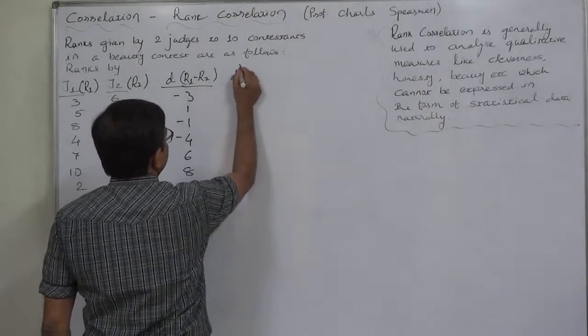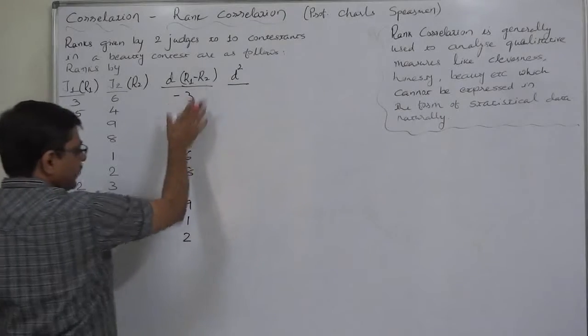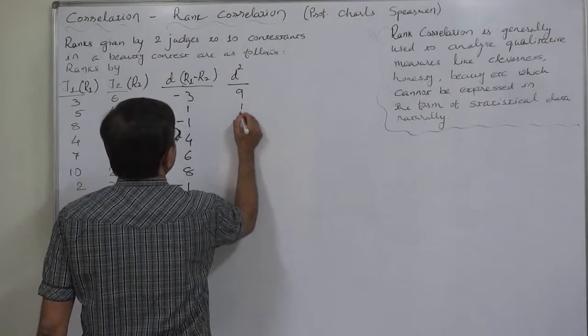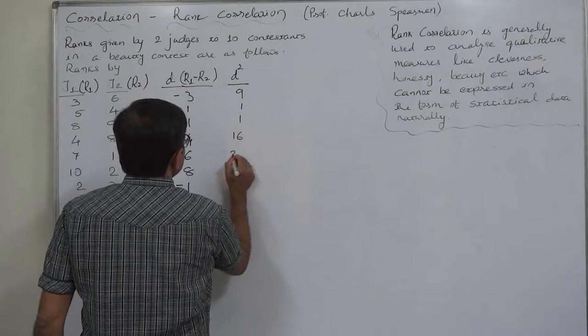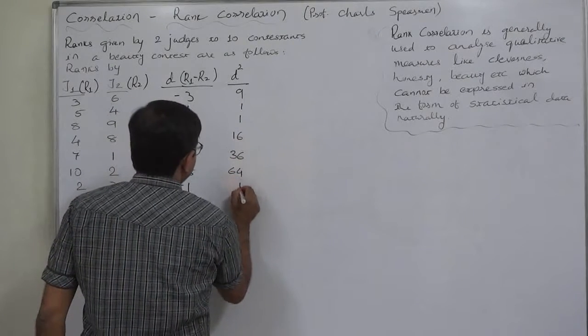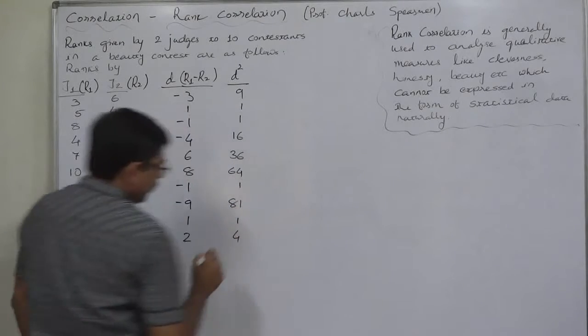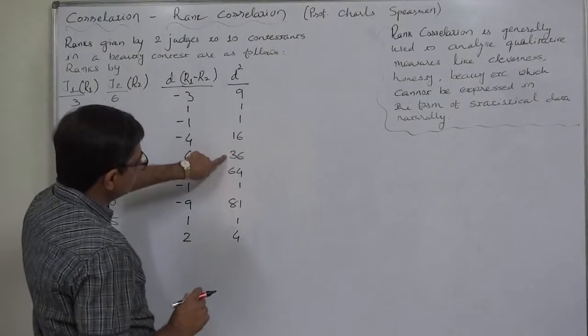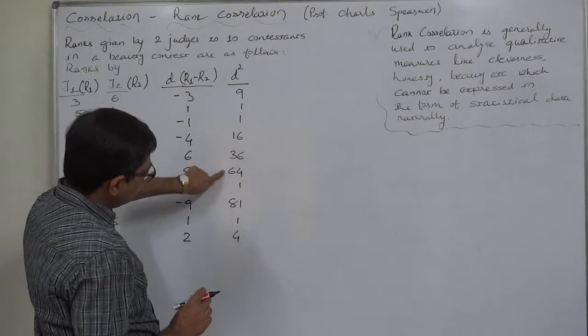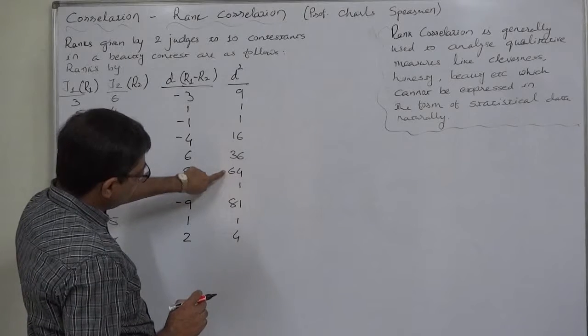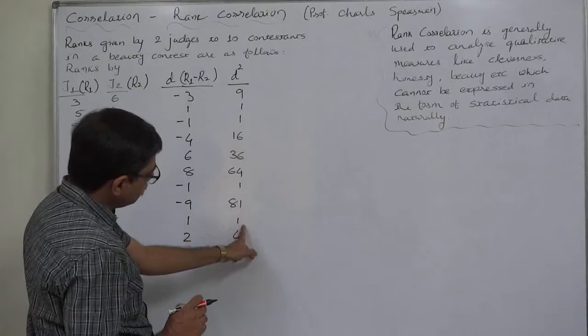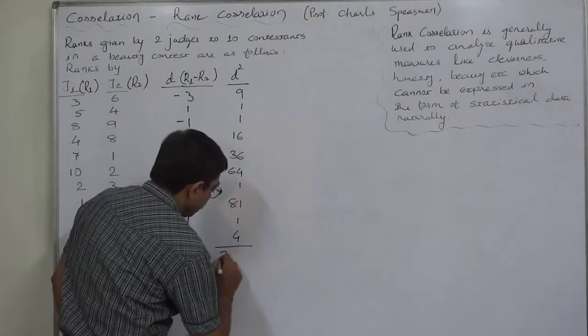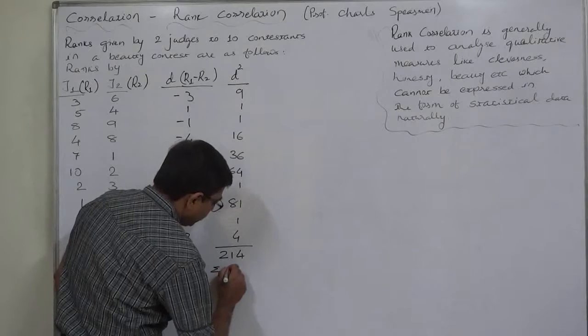And now, the last thing: d square. Whether number is positive or negative, the square value is always positive. 9, 1, 1, 16, 36, 64, 1, 81, 1 and 4. So the summation will be 11 plus 16 is 27, plus 36 is 63, plus 64 is 127, plus 1 is 128, plus 2 is 130, plus 4 is 134, plus 80 is 214. This is summation of d square, sigma d square.